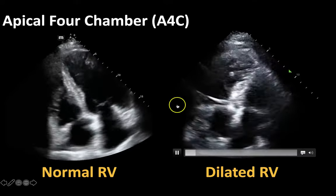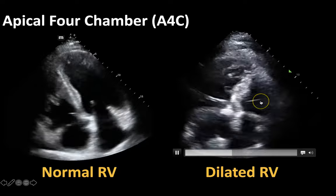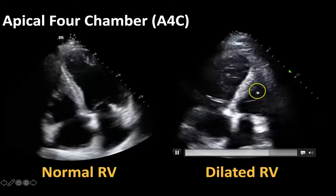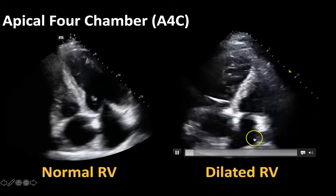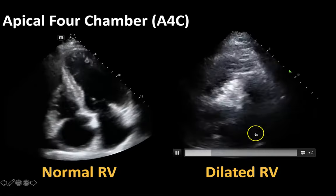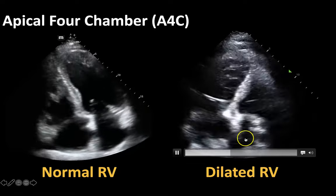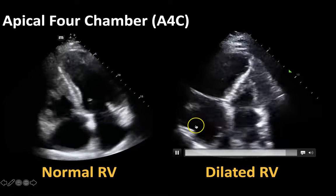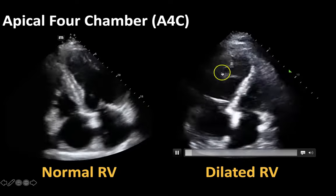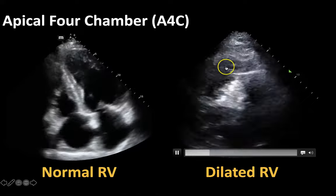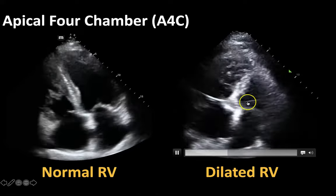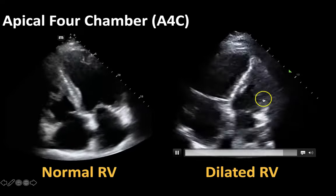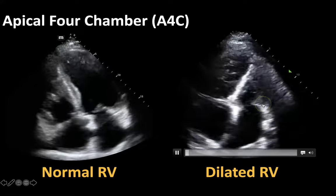This is in contrast to the heart on the right side of the screen. Again this is your apical four chamber view — not the greatest window, but you can still appreciate here that this is your left atrium, your left ventricle, your right atrium, your right ventricle. When you see the free walls coming in and out of plane, you can assess for the diameter here.